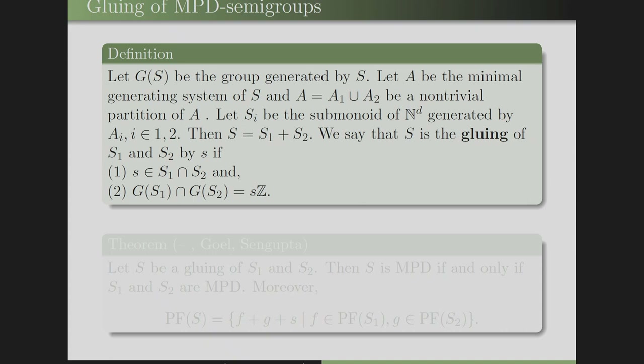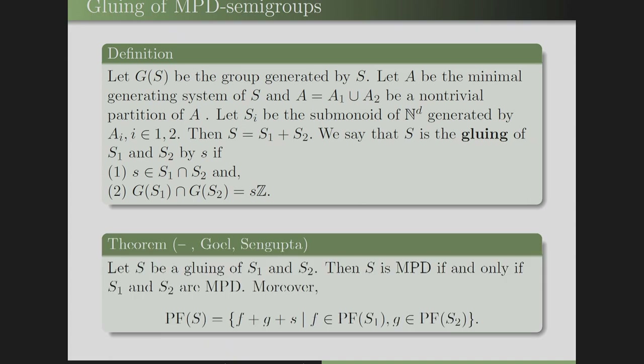We define the gluing of semi-groups. Let G(S) be the group generated by the semi-group and let A be the minimal generating system of S. Partition A into two non-trivial parts A_1 ∪ A_2, and let S_i be the submonoid of N^D generated by A_i. Then S = S_1 + S_2 is called the gluing of S_1 and S_2 by some element if that element lies in S_1 ∩ S_2 and the intersection of the groups generated by S_1 and S_2 equals the group generated by that element alone. We prove that S is MPD if and only if both S_1 and S_2 are MPD, and we give an explicit description of the pseudo-Frobenius elements of the gluing.